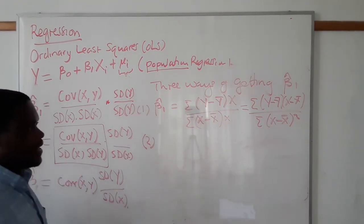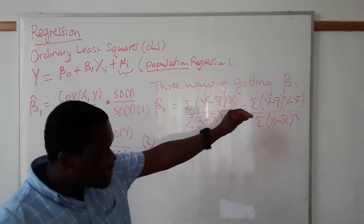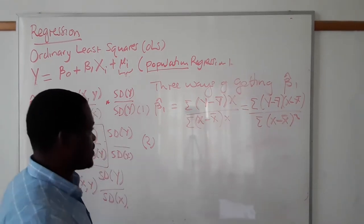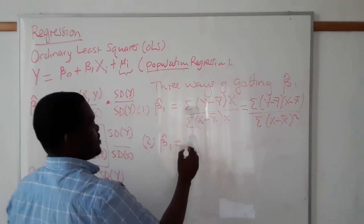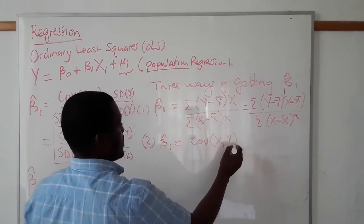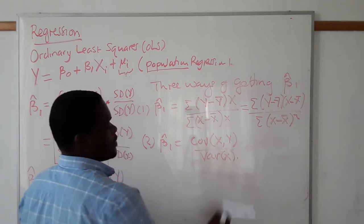Then method two is to manipulate this because implicit in this formulation is the idea of variance and covariance. So β₁ is actually equal to the covariance of X and Y over the variance of X.